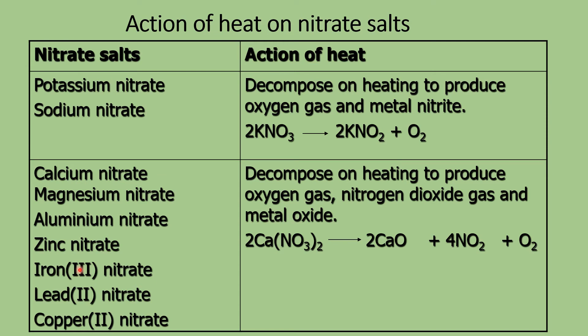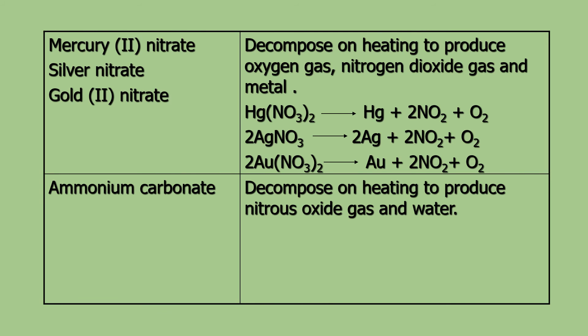The next group — calcium nitrate, magnesium nitrate, aluminum nitrate, zinc nitrate, iron nitrate, lead nitrate, and copper nitrate — decompose on heating to produce oxygen gas, nitrogen dioxide gas, and metal oxide. Nitrogen dioxide is a familiar gas — it has a brown color and is a pungent, quite poisonous gas.